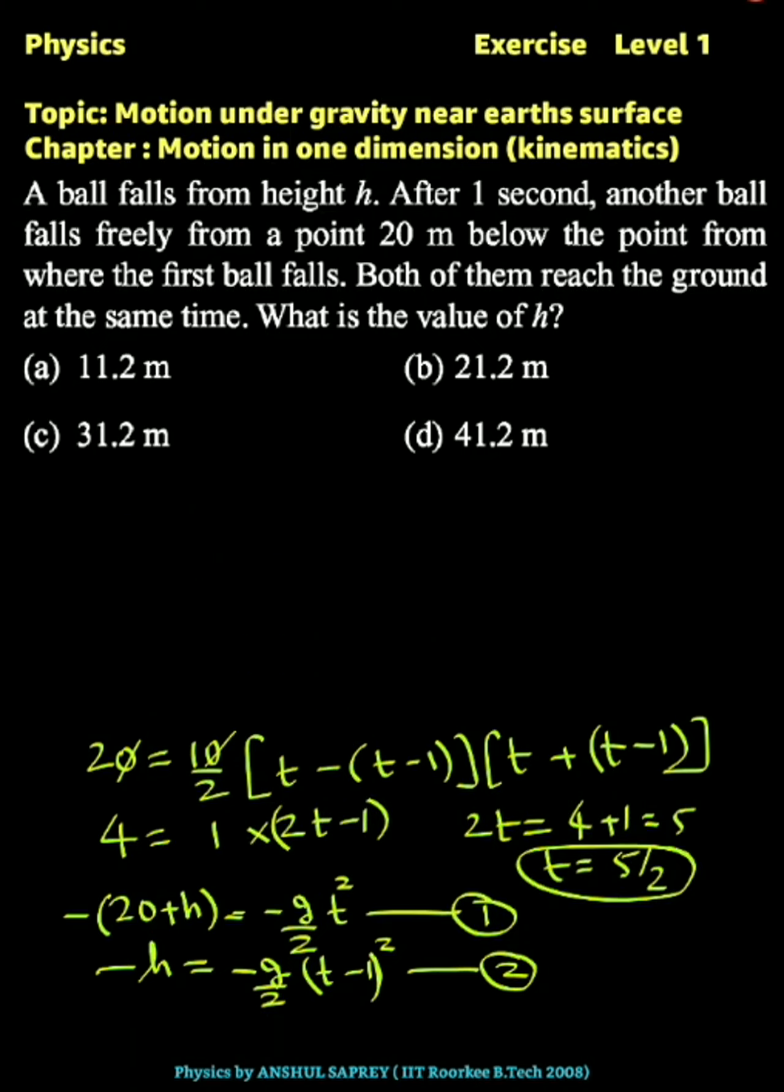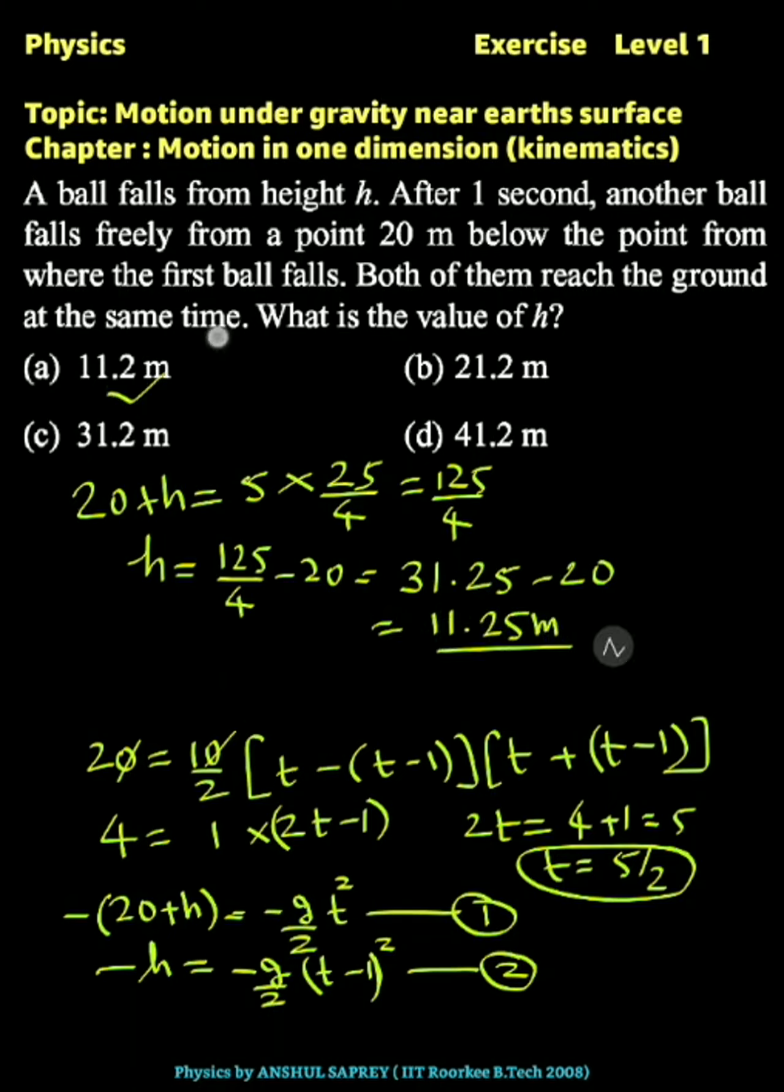Let's substitute this value in the first equation. We'll get 20 plus h equals 5 times t squared, which is 25 by 4, or 125 by 4. So h equals 125 by 4 minus 20, or 31.25 minus 20, or 11.25, which is option A, the first option.